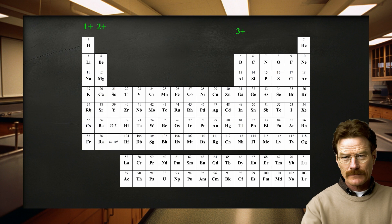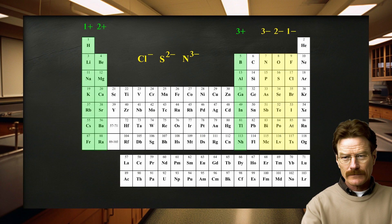The superscripts negative, 2 negative, and 3 negative represent net charges resulting from the gain of 1, 2, and 3 electrons, respectively. Elements in group 17 can gain 1 electron, elements in group 16 can gain 2 electrons, and elements in group 15 can gain 3 electrons. Many of the other groups do not lend themselves to such simple rules.